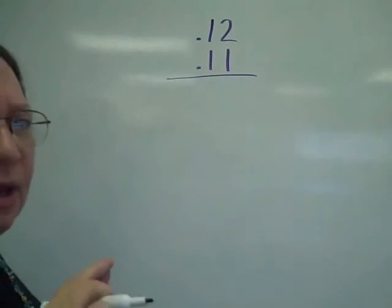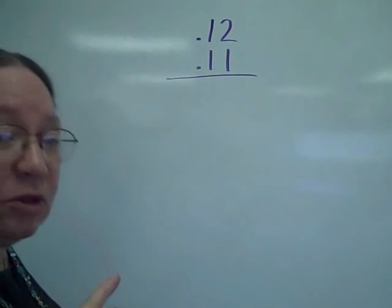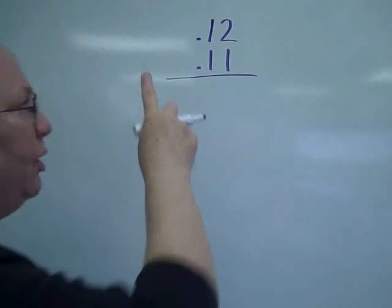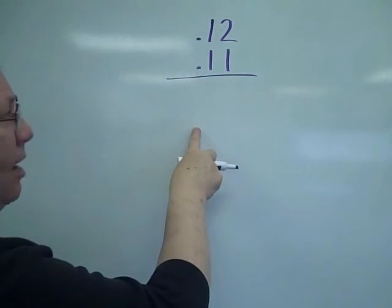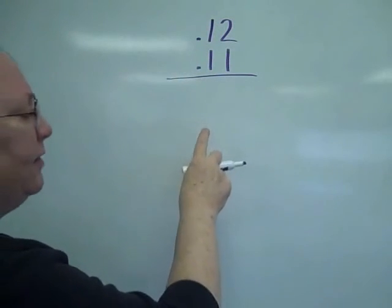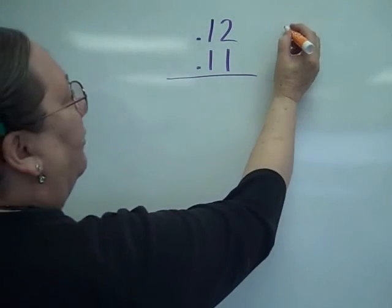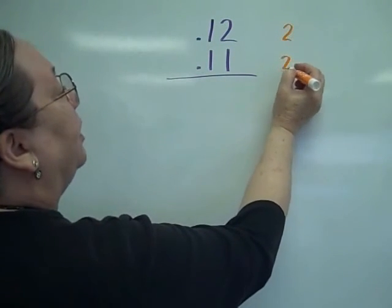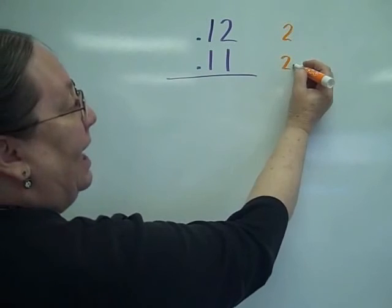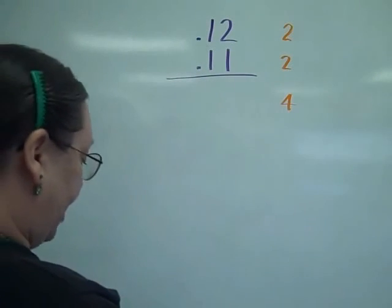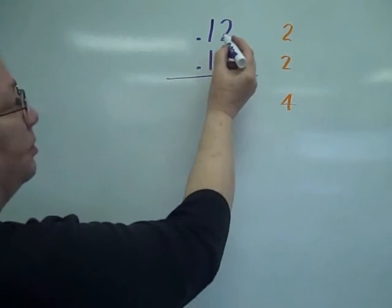One trap you have to watch out when you're multiplying decimals is when you add and subtract, you get so used to just dropping it down. And if you have the same number of decimals in both of them, you have two here and two here, remember you've got to add these up to give you a total of four in your answer.